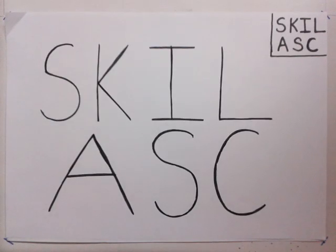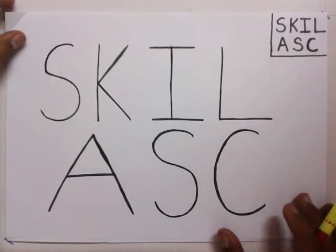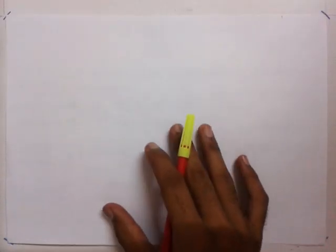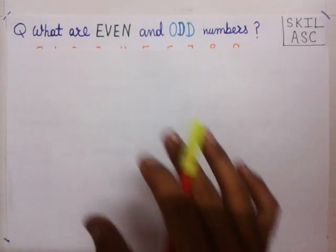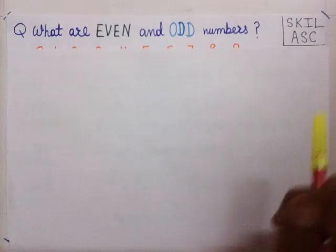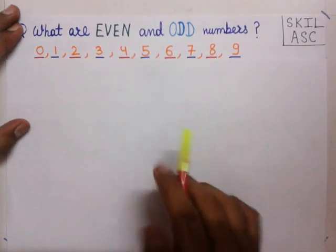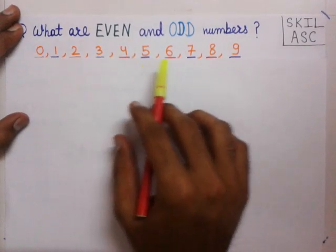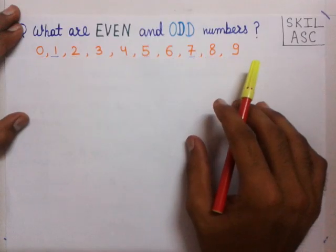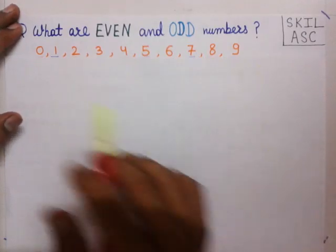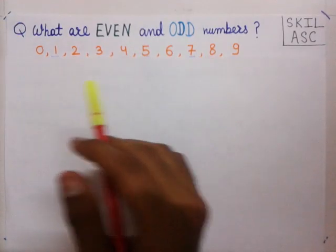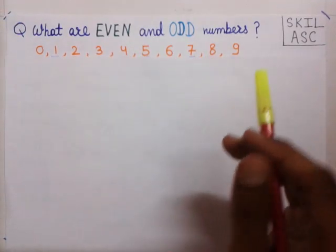Welcome to SKILL ASC channel. In this video we are going to talk about even and odd numbers. The question is: what are even and odd numbers? We know these numbers: 0, 1, 2, 3, 4, 5, 6, 7, 8, 9. Now, which of these numbers are even and which are odd?